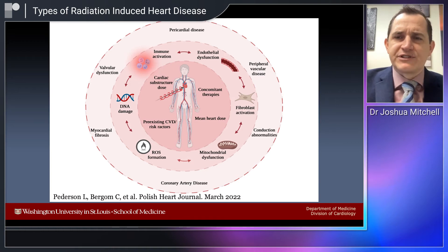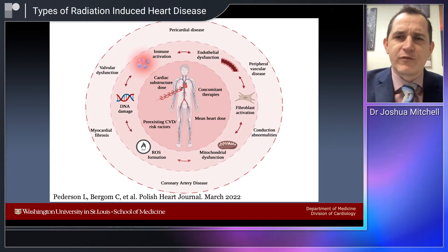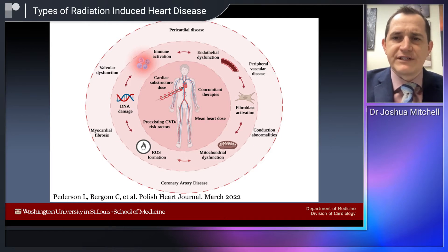I have a couple of pictures to show you. One is from the Polish Heart Journal, due for publication just next month, led by Dr. Peterson and Dr. Bergen of Radiation Oncology. It shows the many different ways that radiation can affect the cells, the vasculature, the heart, the pericardium, and leads to pericardial disease, valvular disease, myocardial fibrosis, coronary artery disease, as well as peripheral vascular disease.